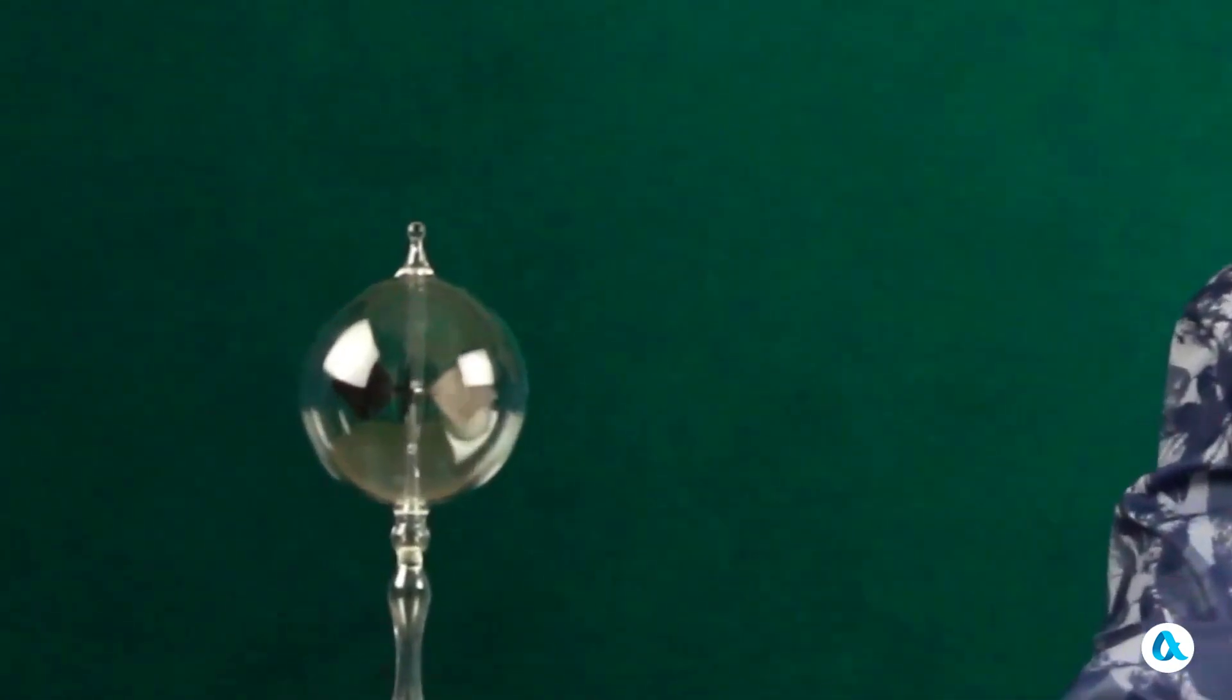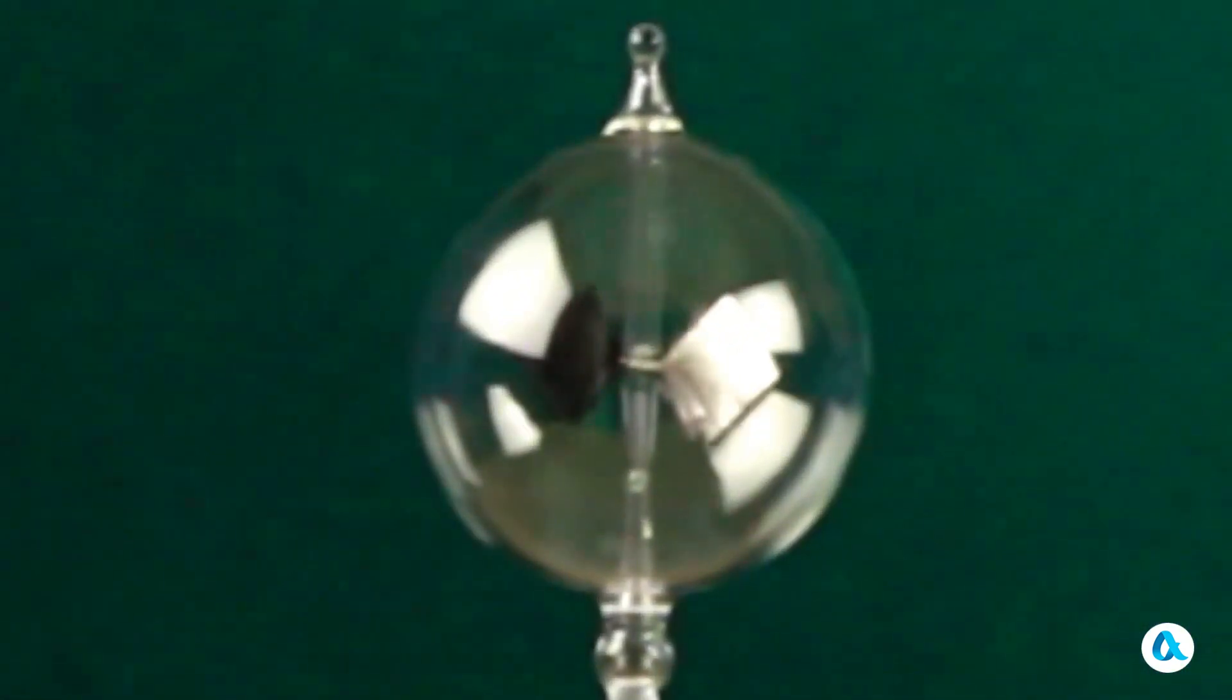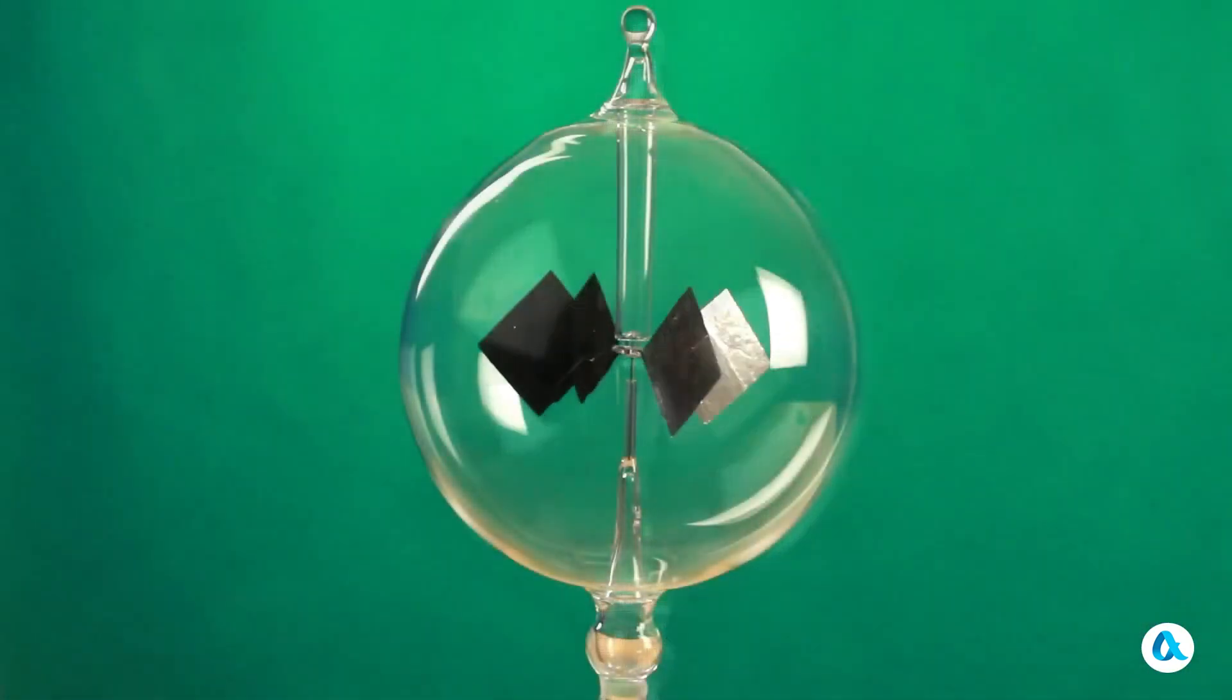It is a glass sphere from which the air has been completely evacuated and inside an extremely lightweight rotor is mounted on a needle allowing it to spin with very little friction. The blades of this rotor are blackened on one side and can reflect light like a mirror on the other side.